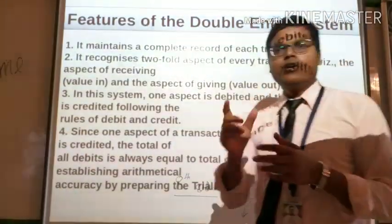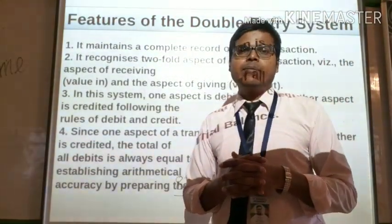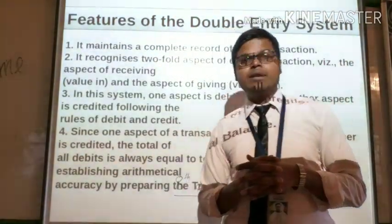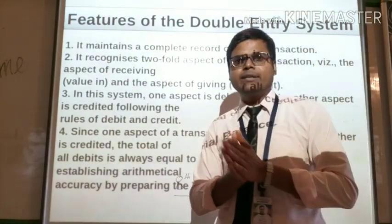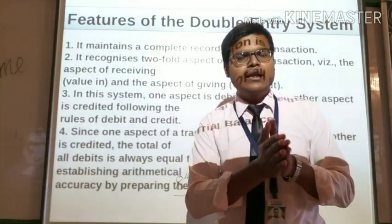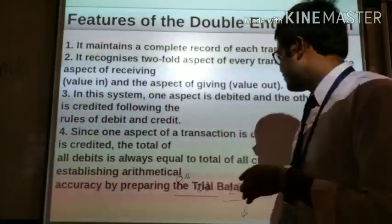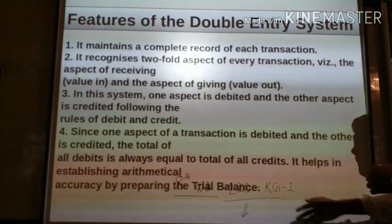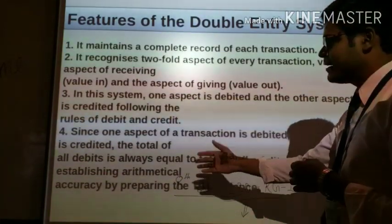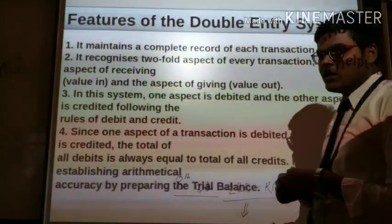When we follow the rules of debit and credit, the totals of debit and credit are always equal. It helps in establishing the mathematical accuracy by preparing the trial balance.